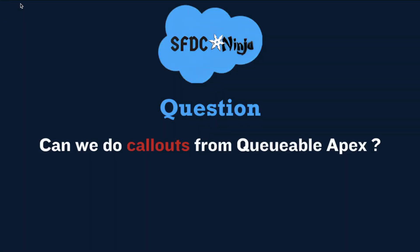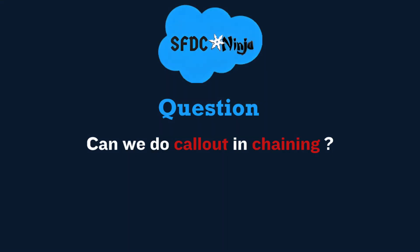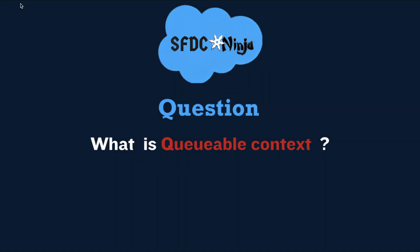Next: can we do callouts from Queueable Apex? Yes, we can do callouts from a Queueable class. For that, you have to implement an interface which is database.AllowsCallouts in your class. Next: can we do callouts in chaining? Yes, callouts are also allowed in chained Queueable jobs.